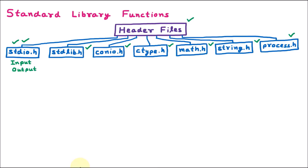The first function is printf, which is used to display the output on the user screen. The next function is scanf, which is used to take input from the user. The next function is getc — getc is used to take character input. Here 'c' stands for character, so we are taking character input.